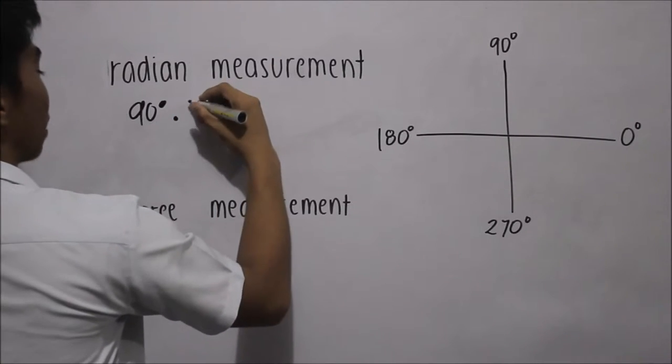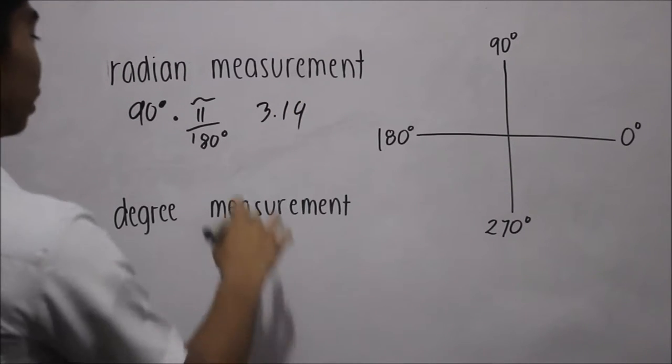So we need it times pi over 180. We all know that pi is equal to 3.14. But in the radiant measurement, conversion, pi is equal to 180 degrees.